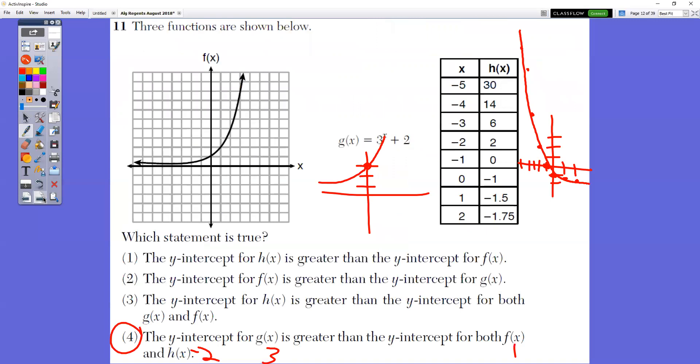In question number 11, what you want to do is you want to graph these, right? And they want to know which statement is true. So we have the f of x, we have the g of x, and we have the h of x. So which statement is true? It's choice four. The y-intercept for the g of x, that's right here. That's at three, is greater than the y-intercept for both the f of x and the h of x. The y-intercept for f of x is one right here. And the y-intercept is right here for h of x, which is negative one. So three is bigger than one and negative two.